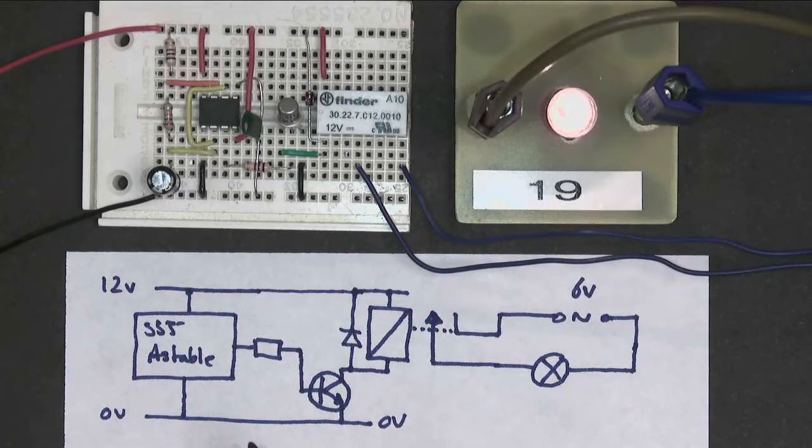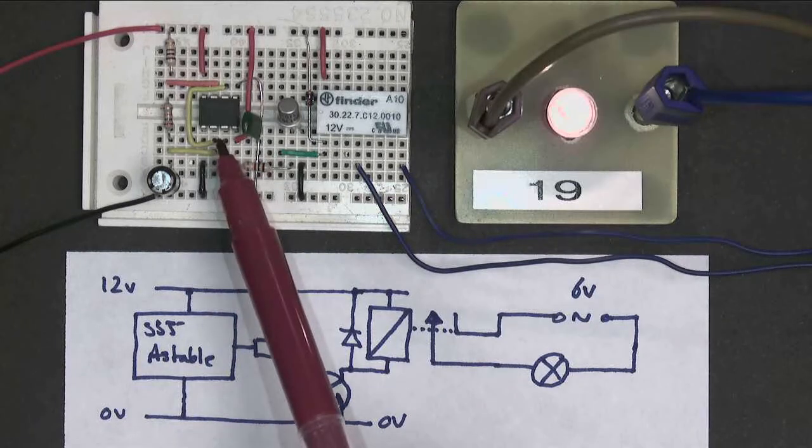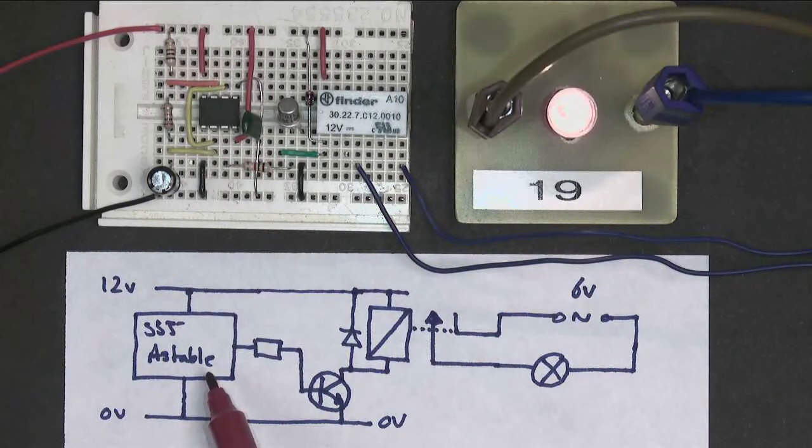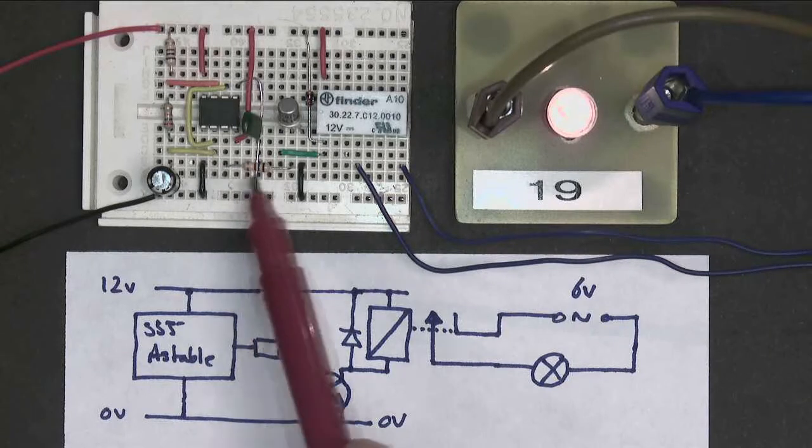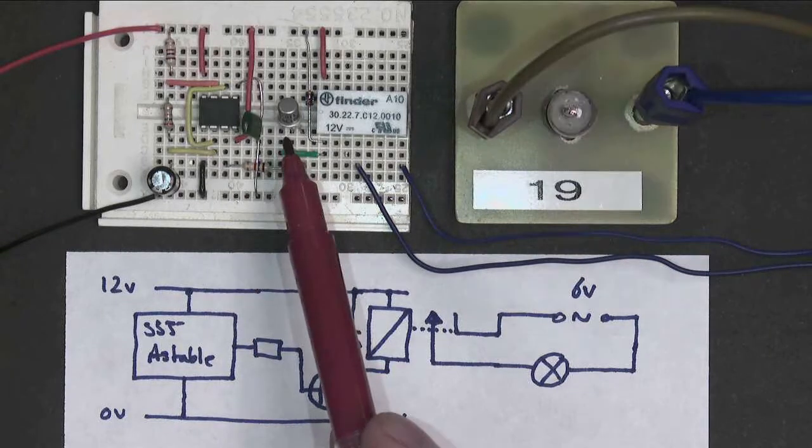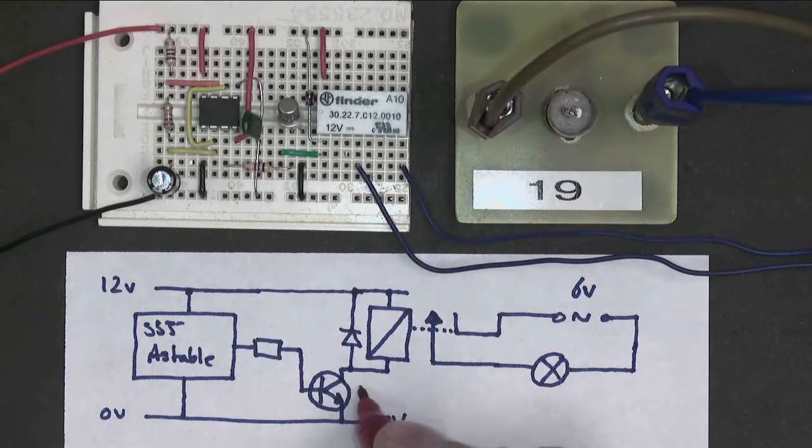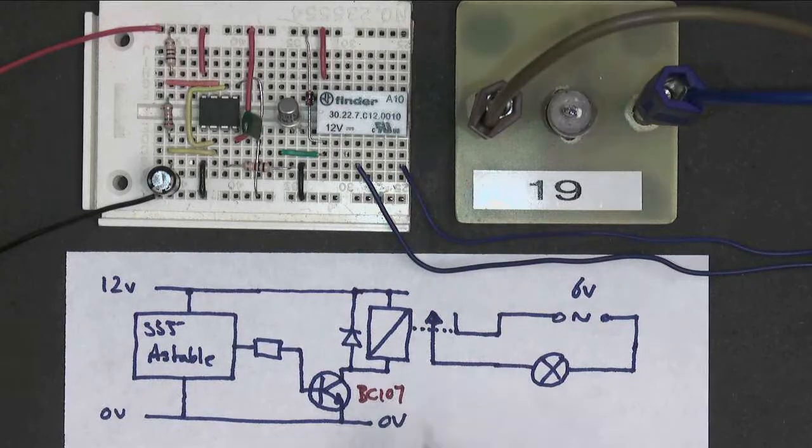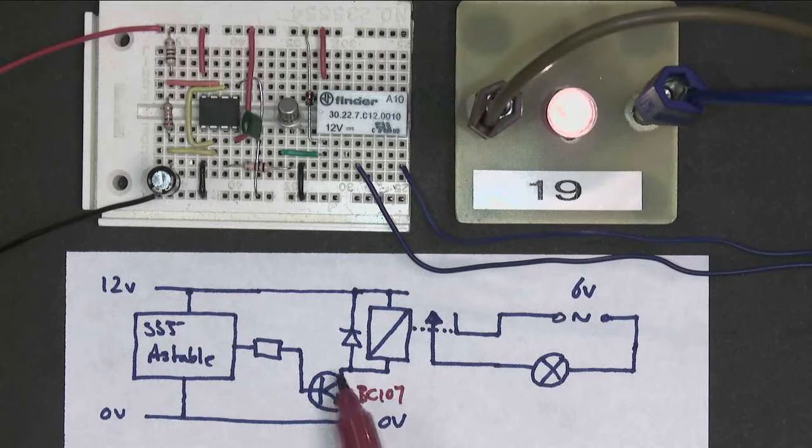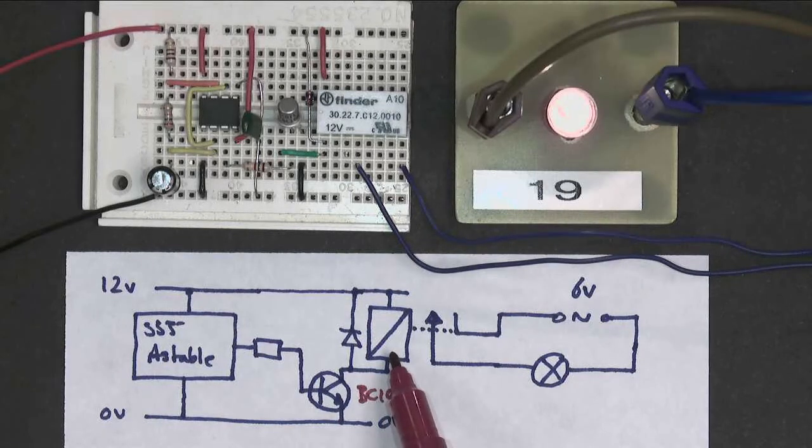Now in our final circuit, we have the same 555 astable, just here, but this time the astable is controlling a little NPN transistor. I'm using a VC107 in this case. So the astable is turning the transistor on and off, and the transistor is controlling the current to the relay.